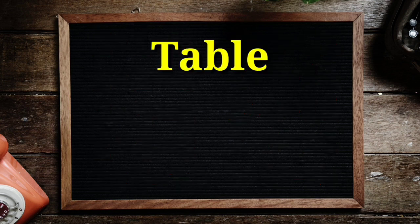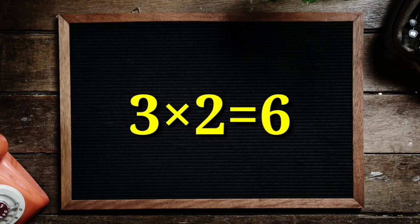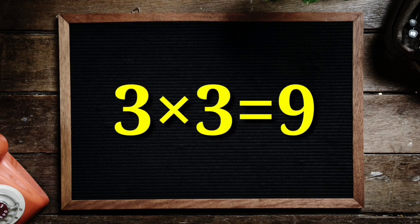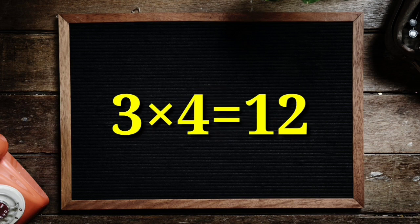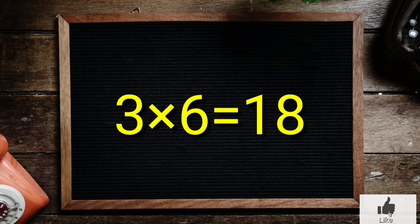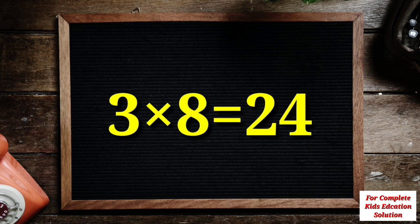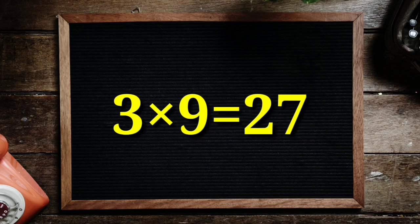Table of 3. 3 1's are 3, 3 2's are 6, 3 3's are 9, 3 4's are 12, 3 5's are 15, 3 6's are 18, 3 7's are 21, 3 8's are 24, 3 9's are 27.